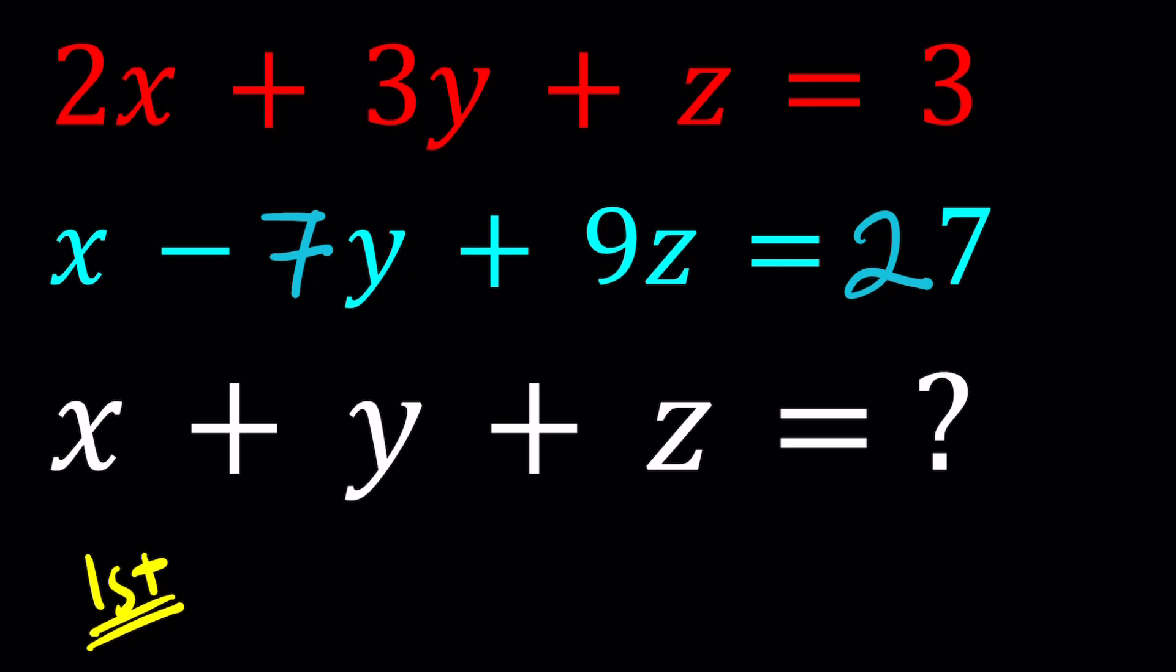And the equation produced that way, whatever the solutions are to that equation, should satisfy the original system because it's obtained from the given system. So it should be consistent, hopefully.